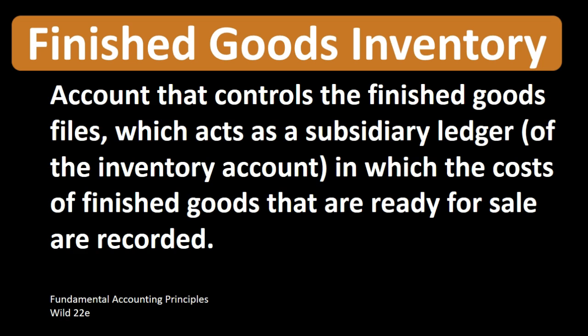When thinking about finished goods inventory, we are considering an account related to inventory, specifically one that is part of a manufacturing company. That's because we're breaking out inventory the way we need to track it—from the inventory that is not finished, the raw materials inventory, to the finished goods inventory.